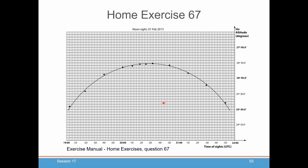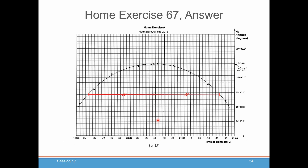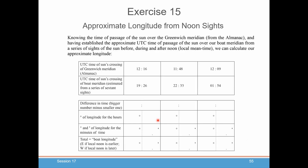Here's an exercise where sights were taken about an hour and a half before and an hour and a half after local noon, with a fairly nice curve drawn through those points. In the home exercises, there's a question about estimating the time of local noon from this graph. What you'll do is find three or four points on the same horizontal line in your graph, calculate their midpoints, then average those midpoints to get a good feel for when your local noon was. The graph also gives you a good estimate of your height at noon to calculate latitude.